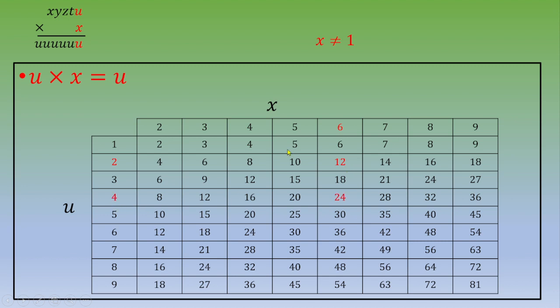So the first answer, this is when u is equal to 2 and x is equal to 6, then the product is 12. 2 and 2. Second case, 4 and 6. This is 24. Then you've got u is 5 and x is 3. u is 5 and x is 5.